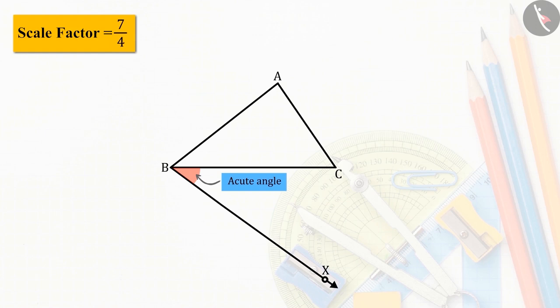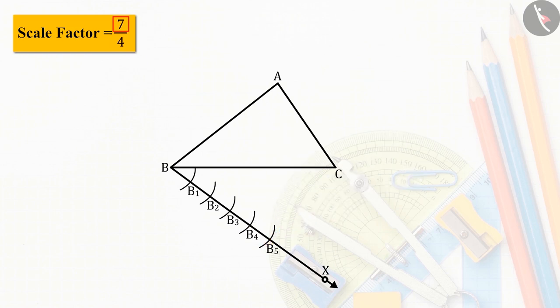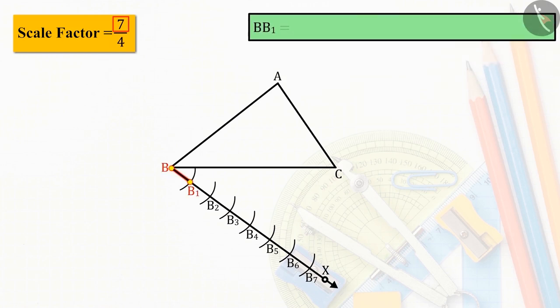Now let us look at the larger number in the scale factor, which is 7 here. So on ray Bx, 7 arcs of equal radius - B1, B2, B3, B4, B5, B6 and B7 - are drawn in such a way so that BB1 equals B1B2 equals B2B3 equals B3B4 equals B4B5 equals B5B6 equals B6B7.